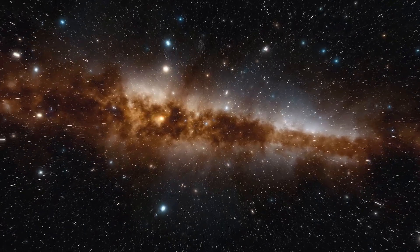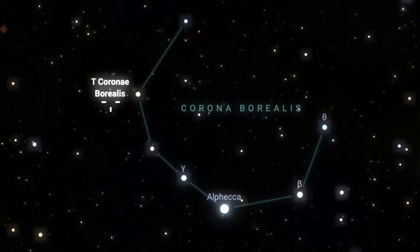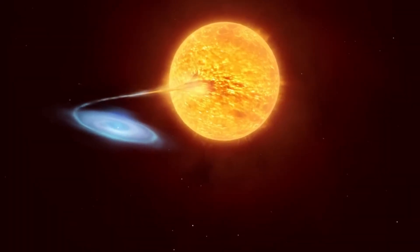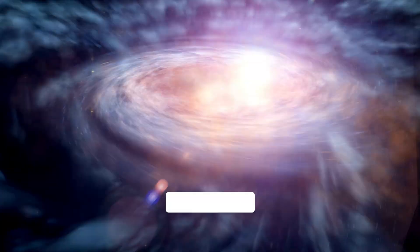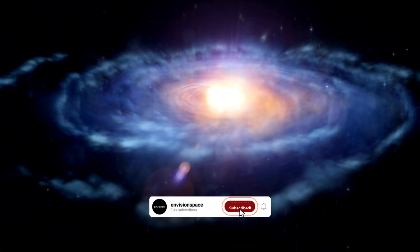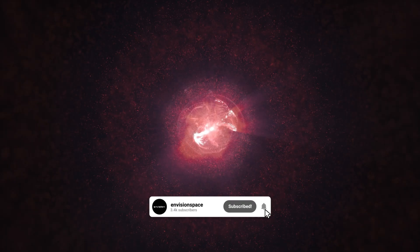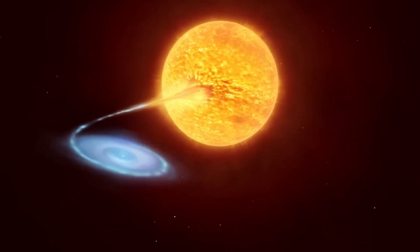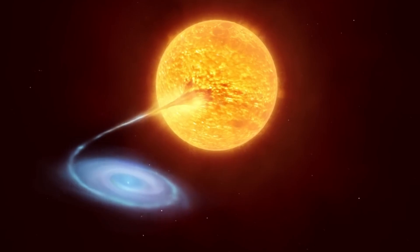Understanding the science behind T. Corona Borealis flare-ups: T. Corona Borealis, or TCB, is not just a single star, but a binary star system composed of a white dwarf and a red giant. These two stars are locked in a cosmic dance, with the white dwarf gradually stripping hydrogen from its red giant companion.